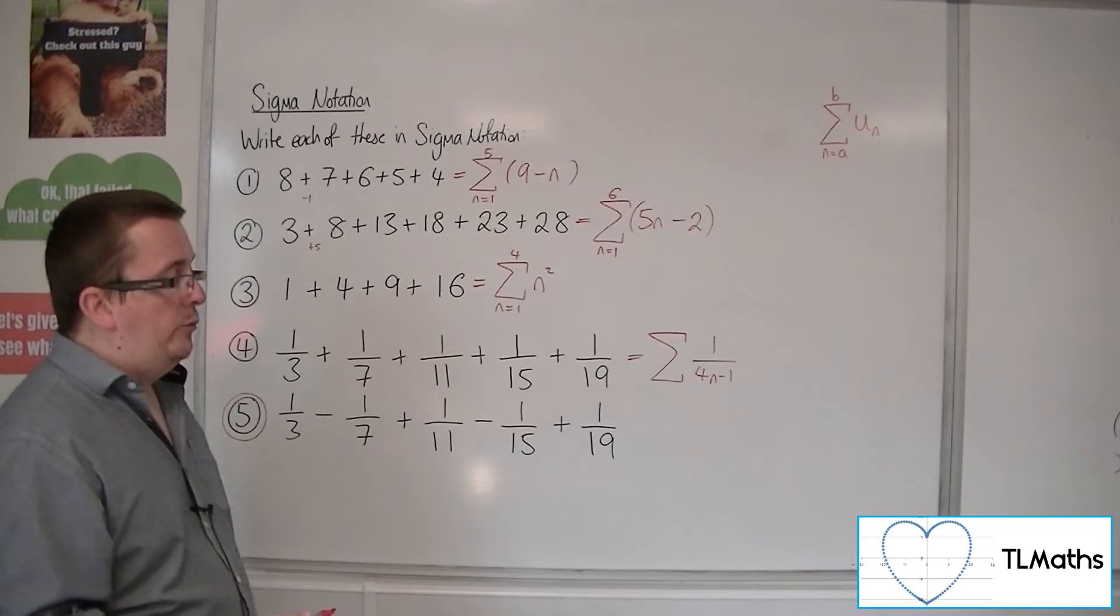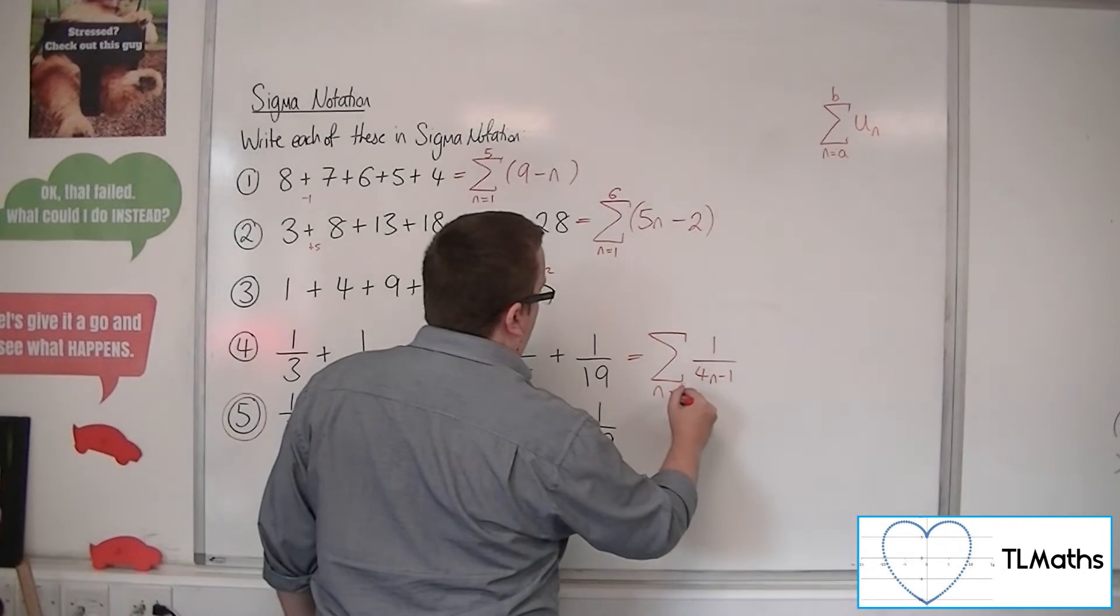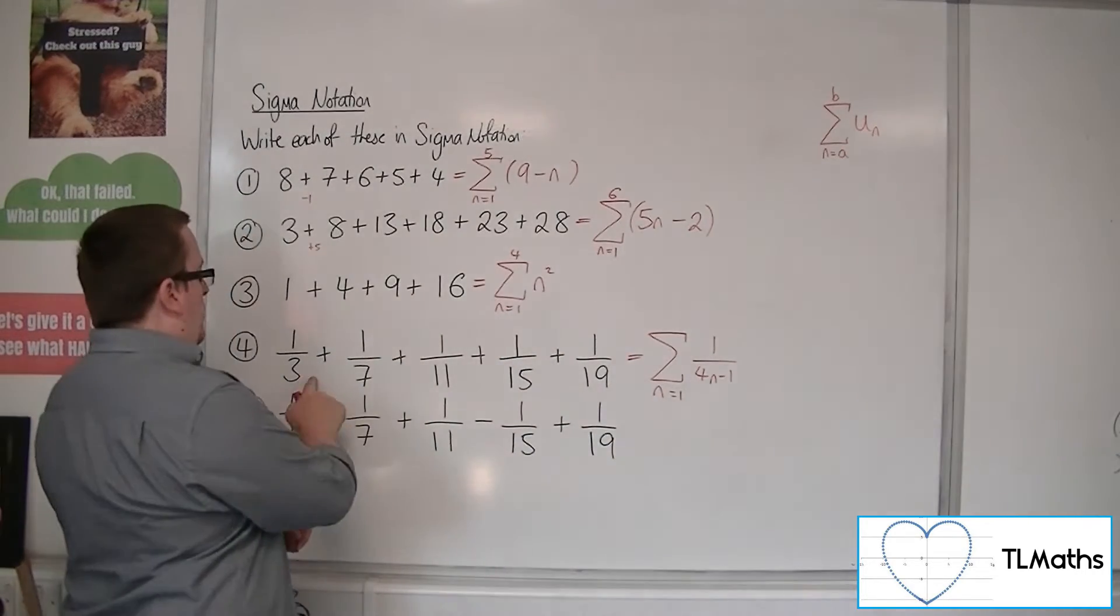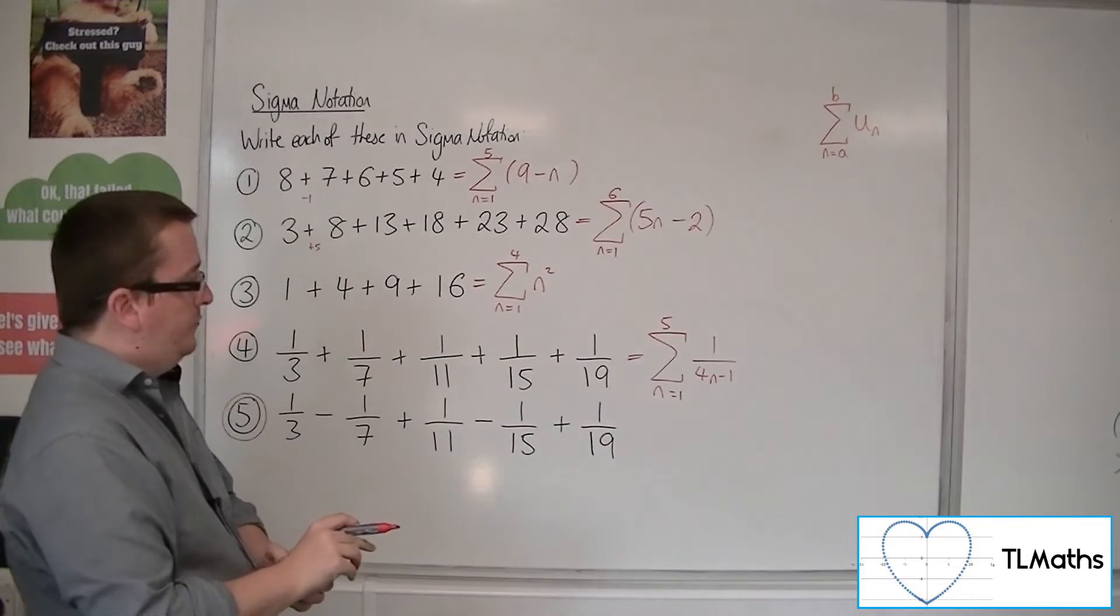So 1 over 4n minus 1 will generate the sequence. So that's going from n is 1 up to 1, 2, 3, 4, 5, 5 terms.